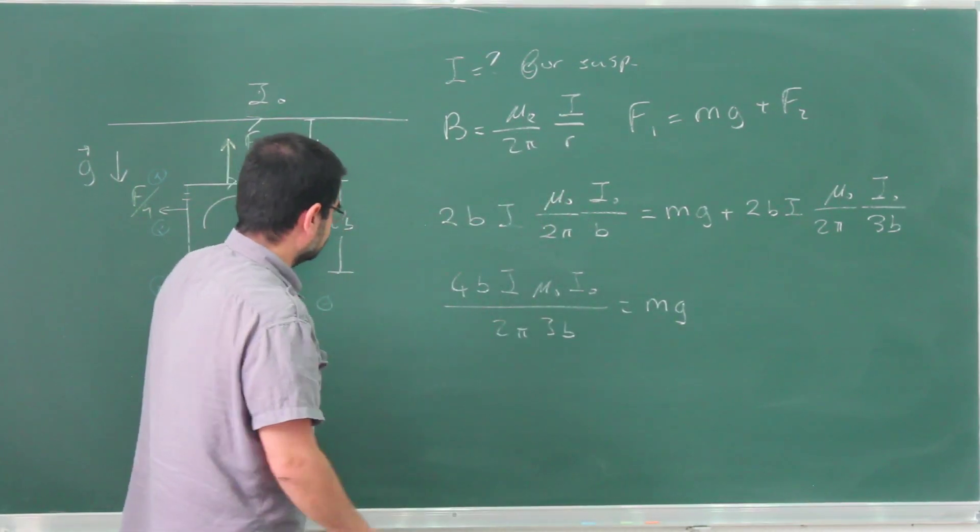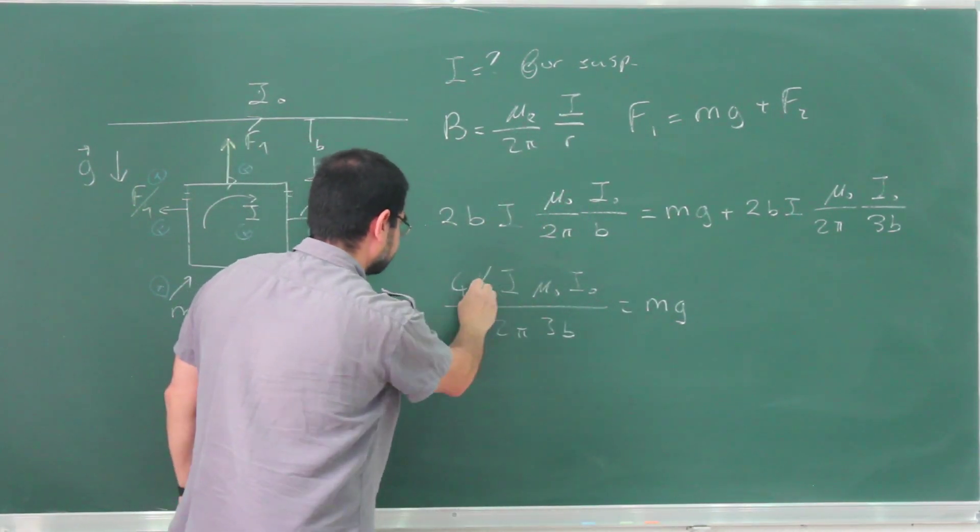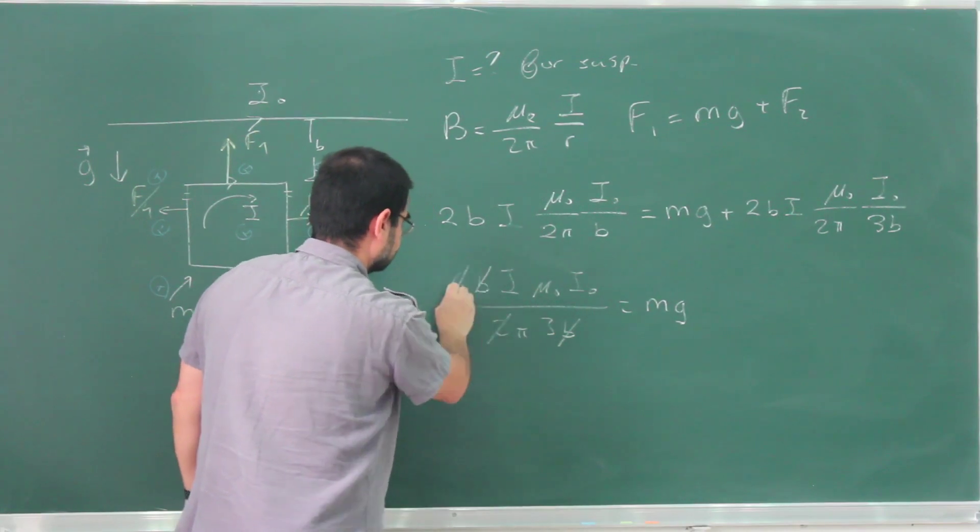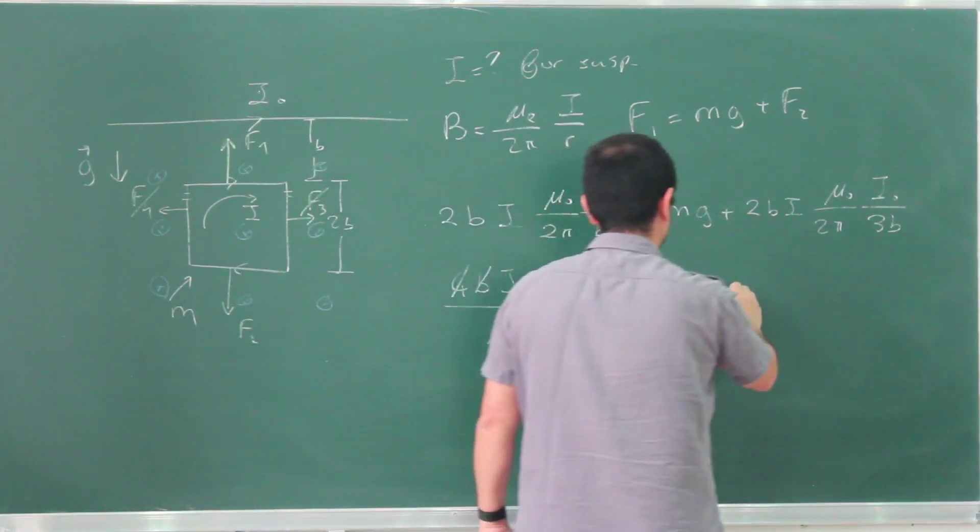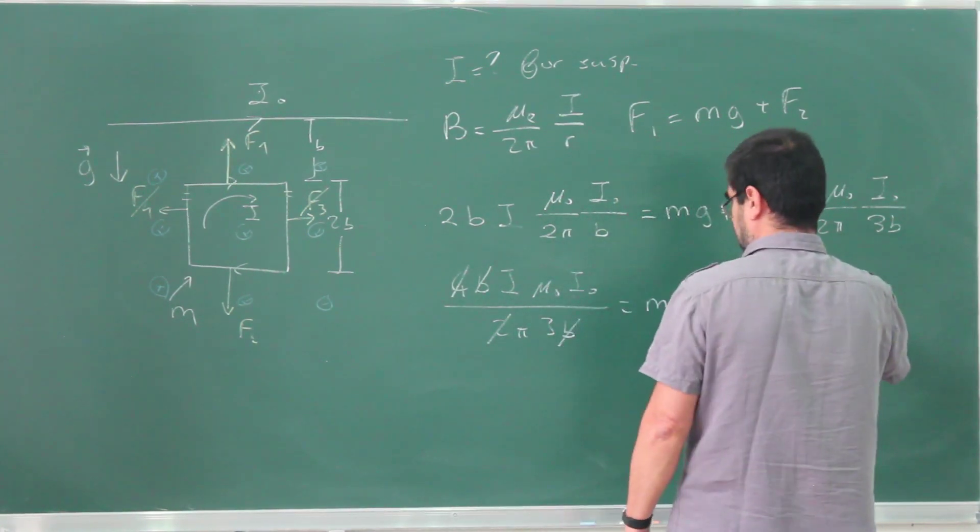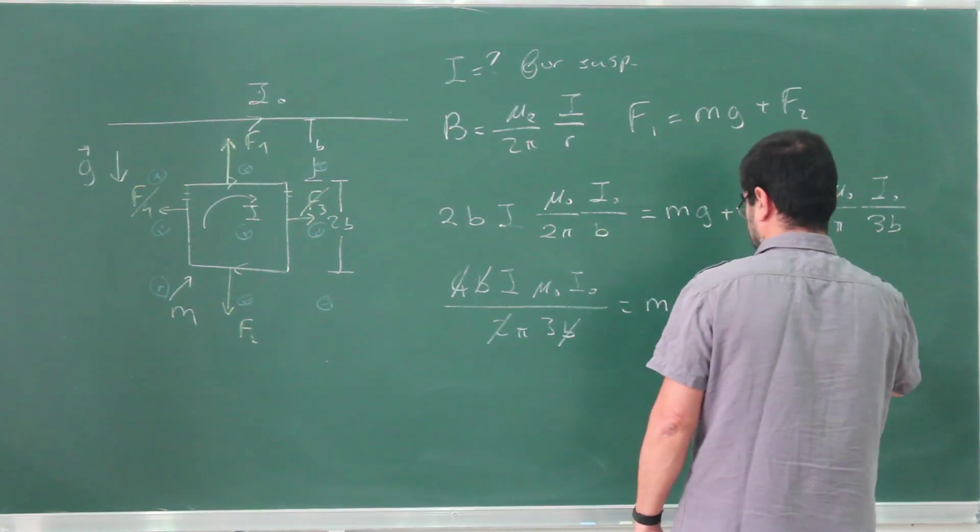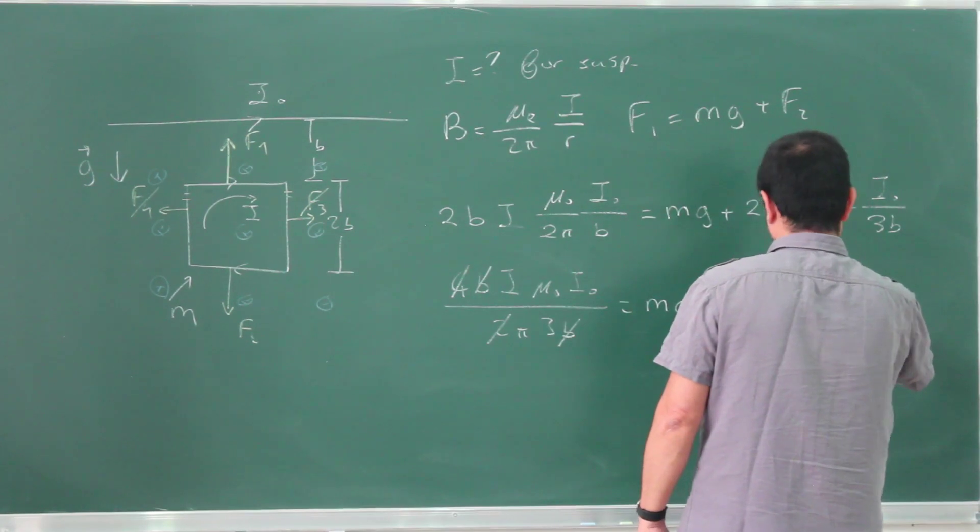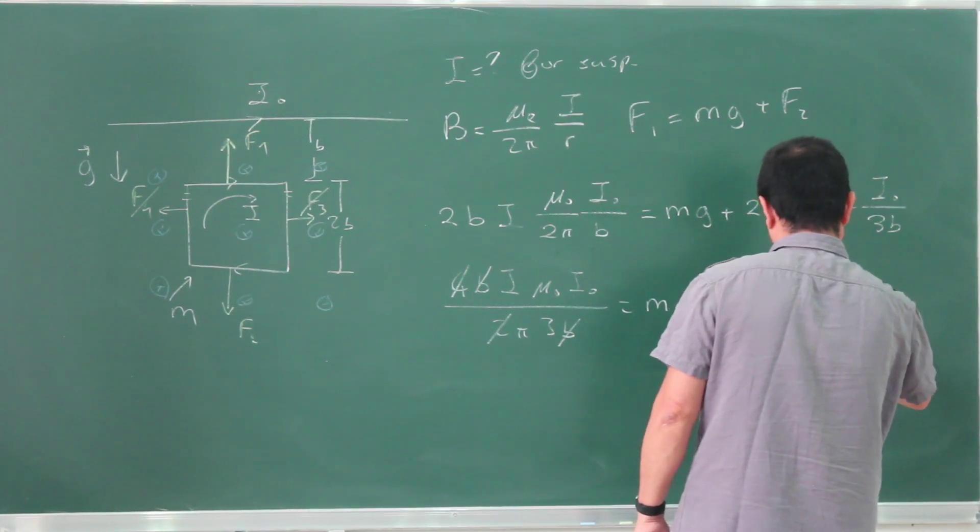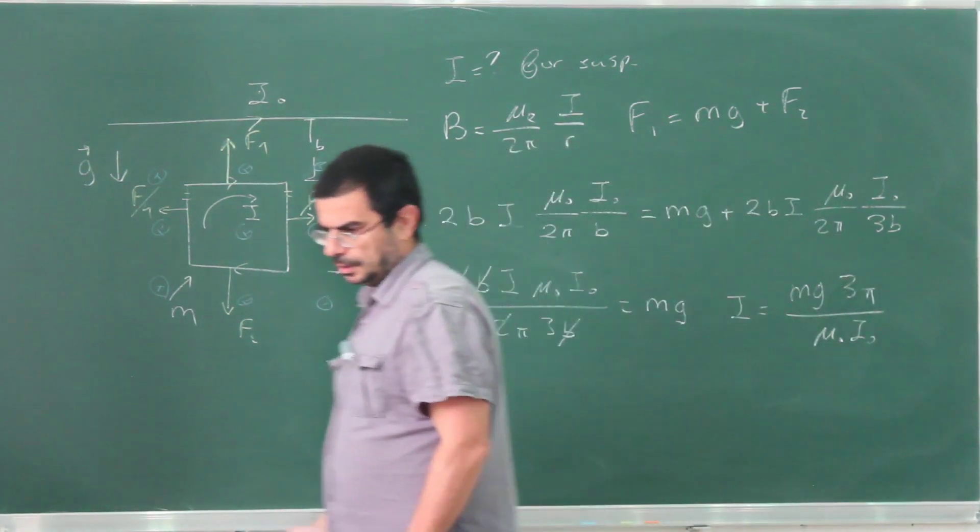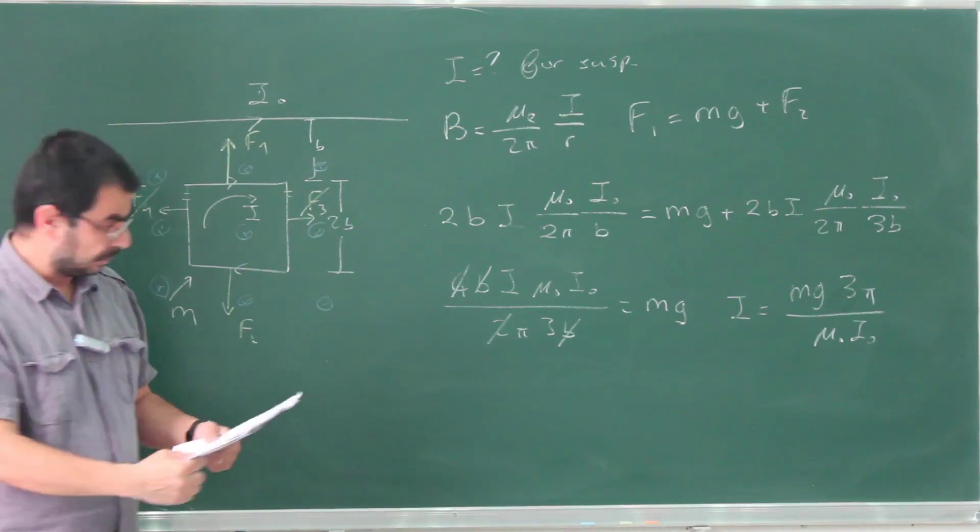And now there are some cancellations. The b's go away, this 2 goes away, I have this 3 here, but I is going to be mg times 3π over μ₀ I₀. Let's see if we have something like this.